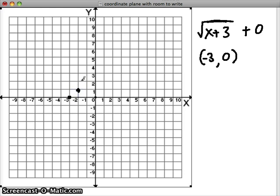Up 1 over 3, 1, 2, 3. And up 1 right 5, 1, 2, 3, 4, 5. All right, so we get to see our square root graph.